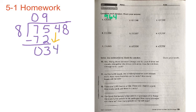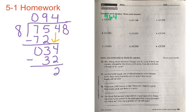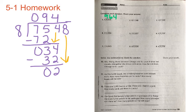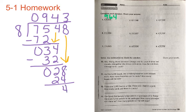We bring down our 4, giving us 34. How many times can 8 go into 34? Four times, because 8 times 4 is equal to 32. We subtract: 4 minus 2 is 2, and 3 minus 3 is 0. Remainder is less than the divisor, so we're good. Bring down the 8, giving us 28. How many times can 8 go into 28? Three times, because 8 times 3 is equal to 24. Subtracting: 8 minus 4 is 4, 2 minus 2 is 0. We're left with a remainder of 4 — so the answer is 943 remainder 4.